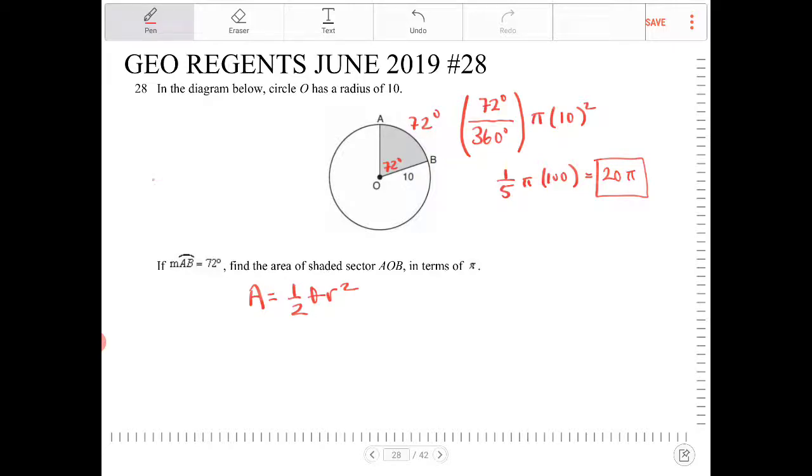So what we need to do: 72 degrees convert it into radians is going to be 72 pi over 180 and this is equivalent to 8 pi over 20, or it's equivalent to 2 pi over 5.